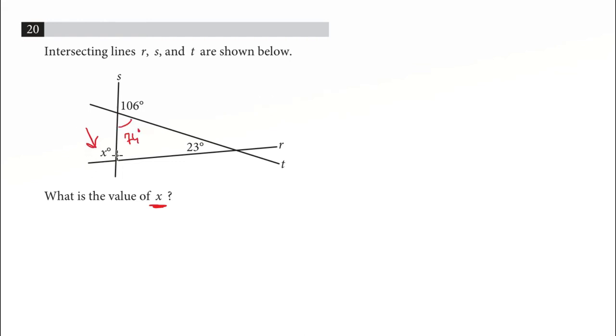In order to find x, we need to find this angle as well. And we said that the sum of internal angles of a triangle is 180 degrees as well. So, in order to find this angle, we must subtract the rest of the angles from 180 degrees. So, 180 minus 74 minus 23, that leaves us with 83 degrees.